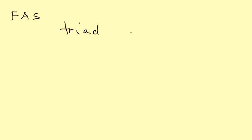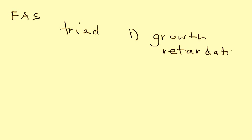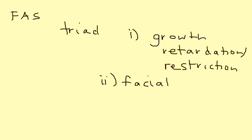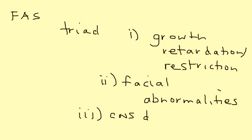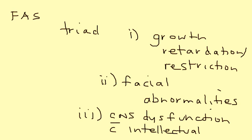Fetal alcohol syndrome is essentially a triad of three things. The first is growth retardation or growth restriction. The second is facial abnormalities, which we'll go through in a moment. The third is CNS dysfunction, which can also lead to intellectual disability. Keep this triad in mind.